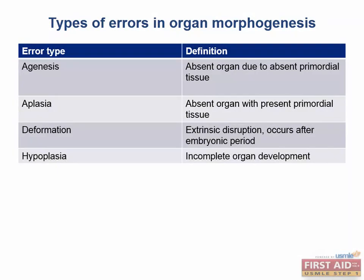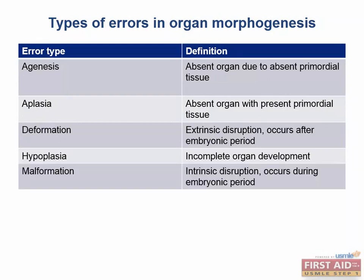Hypoplasia is when an organ does not fully form, such as testicular hypoplasia in Klinefelter syndrome — it's lessened cell growth. Aplasia, in contrast, is a complete lack of cell growth. A malformation is caused by something intrinsic to the developing embryo, occurs during the embryonic period (usually weeks three to eight), and generally results in a permanent organ disorder.